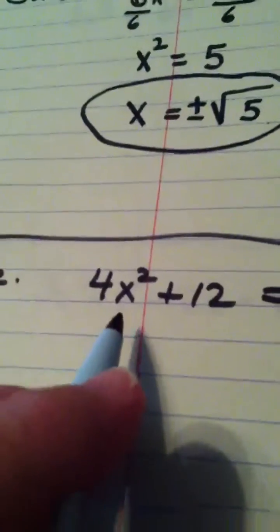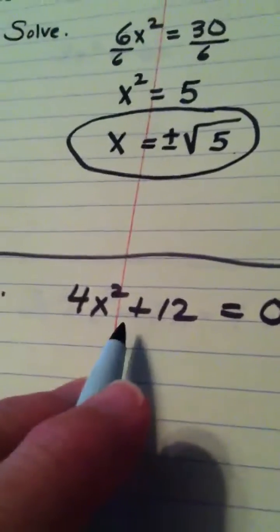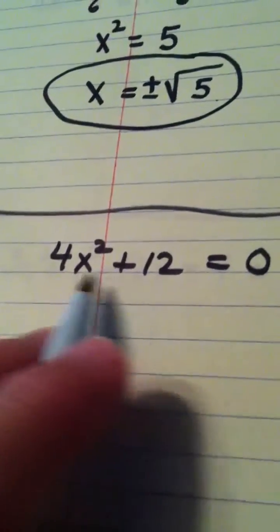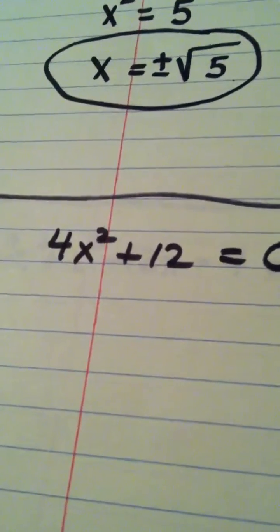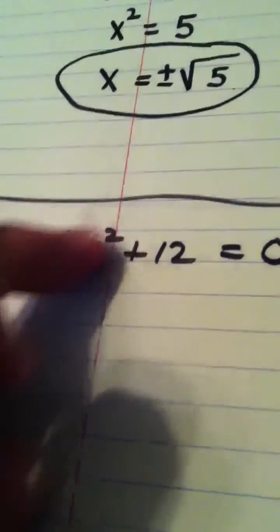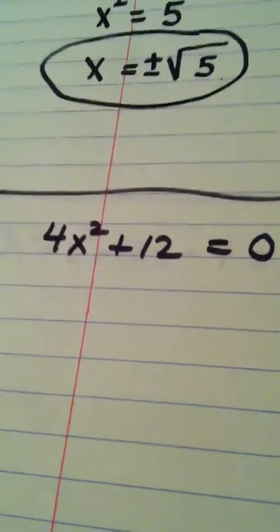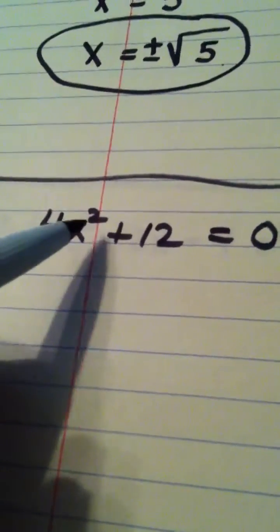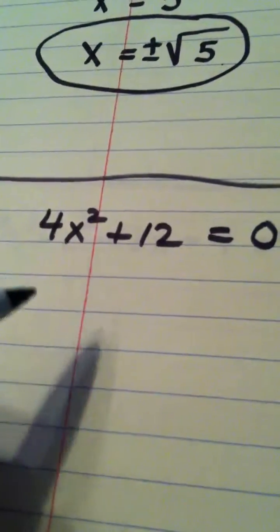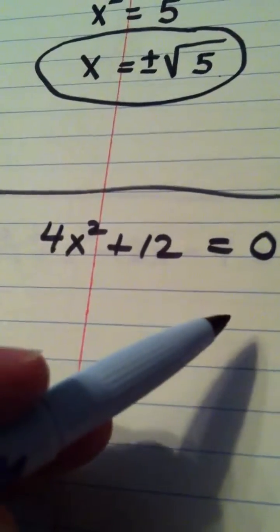Now, this next equation, 4x squared plus 12 equals 0. We're also going to use the square root property here, because we don't see any free-floating x term. We only see x squared. But we have to get this ready. And what I mean by getting it ready, to use the square root property, you have to have it in the form x squared equals a number.